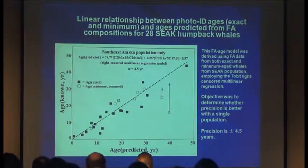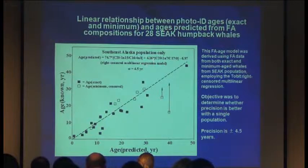The first model is for 28 southeast Alaska humpback whales. He has two terms with fatty acid ratios that drive this model, and the precision was plus or minus 4.5 years. Exact age animals are the solid squares; minimum censored age are the non-solid squares. He used a Tobit right-censored multilinear regression. One key point is that these minimum estimated aged animals appear to be much older than their minimum estimated age.